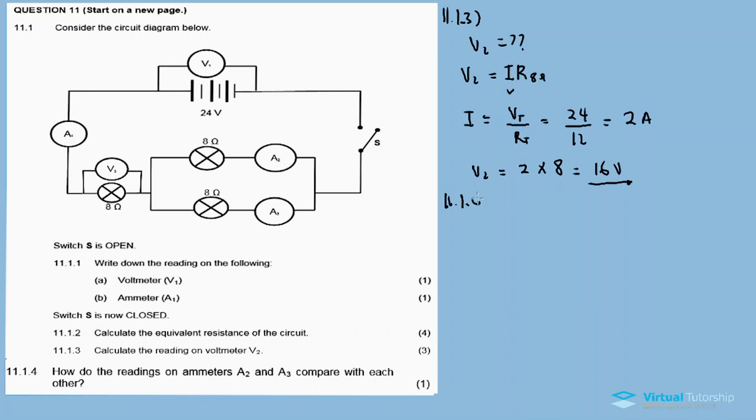11.1.4: How do the readings on ammeter A2 and ammeter A3 compare with each other? The current for the parallel connection divides, but since the resistors are the same (both 8 ohms), the current will also be the same. So A2 equals A3.